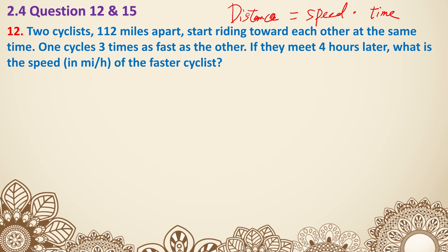You're still using the same formula, but in the examples we talked about in class, the two distances are the same. And these two examples are slightly different. So question 12: Two cyclists, 112 miles apart, start riding toward each other at the same time. One cycles three times as fast as the other. If they meet four hours later, what is the speed of the faster cyclist?